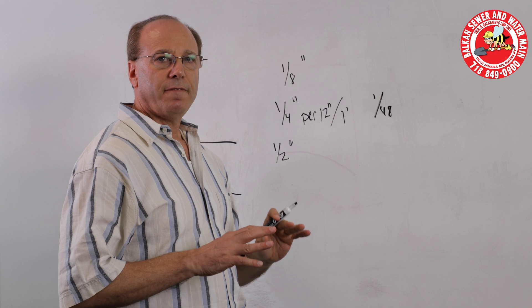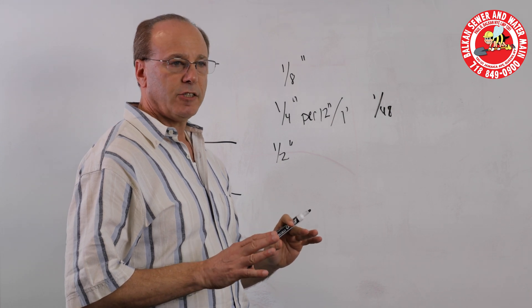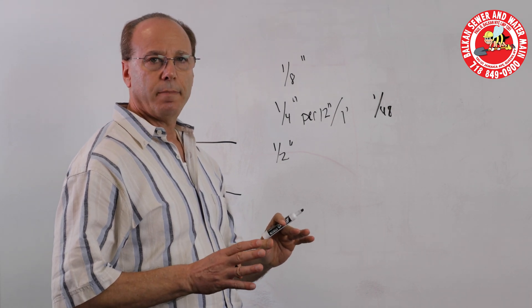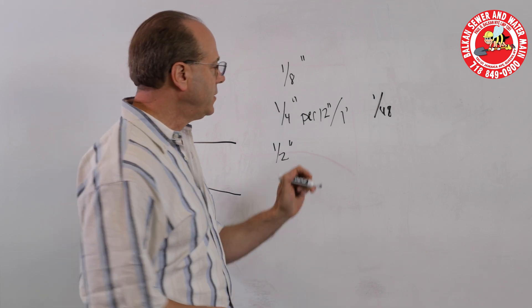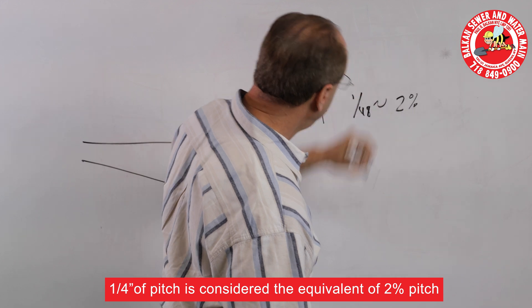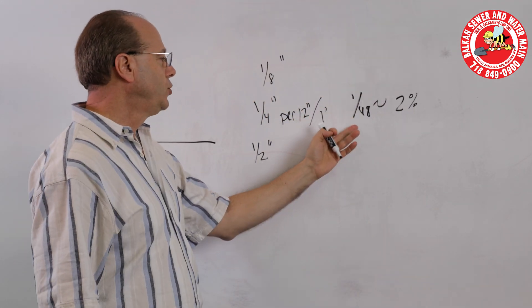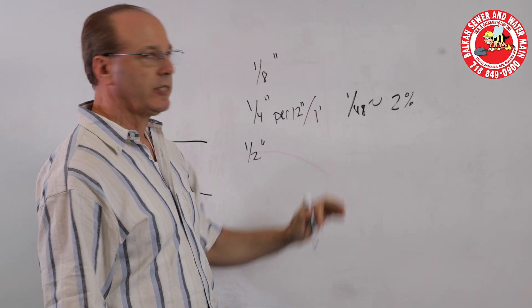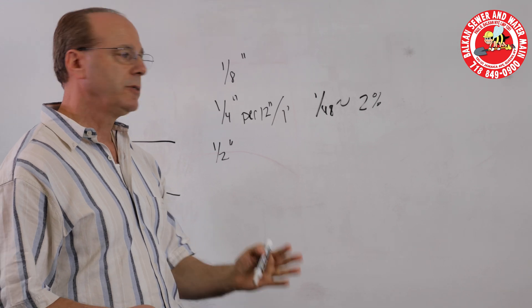And if you rough out the percent of what that is, because the other way the required pitch is indicated is in percentages, 1/48th is considered 2% pitch. 1/48th is 2/96th, 2% 2 of 100, 2% pitch.